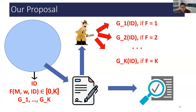Looking back, our proposal captures ring signatures, group signatures, and BAS as special cases. Ring and group signatures correspond to the case of a single disclosing function. For ring signatures it is the zero function, and for group signatures it is the identity function. Meanwhile, BAS corresponds to the case of two disclosing functions: the zero function and the identity function.